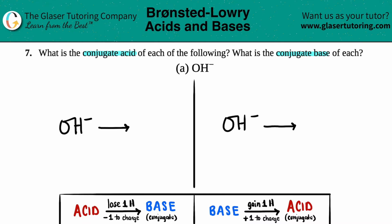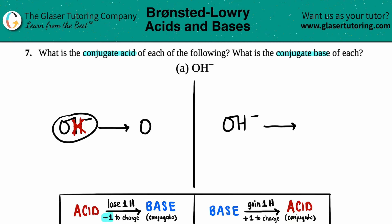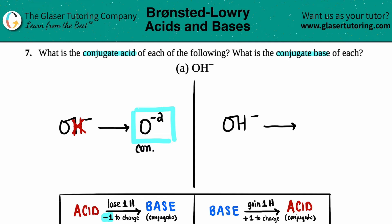Remember, a conjugate base always has one less hydrogen than the acid. So we lose a hydrogen — there's only one hydrogen in OH⁻, so that hydrogen gets lost, leaving just O. Since you're losing a hydrogen ion (H⁺), you subtract one from the charge. OH⁻ had a charge of −1, so −1 minus 1 gives an overall charge of −2. That gives us O²⁻ as the conjugate base.